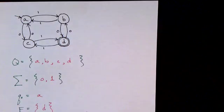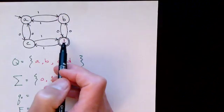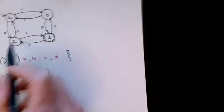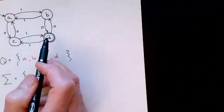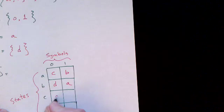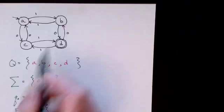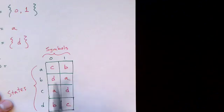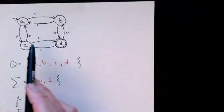If we're in state A and we see a zero, we go to state C; if we see a one, we go to state B. If we're in state B and we see a zero, we go to D; if we see a one, we go back to A. If we're in state C and we see a zero, we go to A; if we see a one, we go to D. If we're in state D and we see a zero, we go to B; if we see a one, we go to C. So assuming I did this correctly, this is our transition function delta, and we have now formally defined this finite state machine.